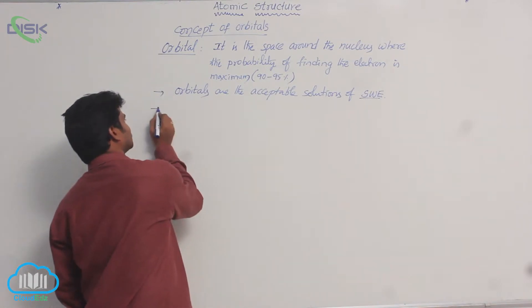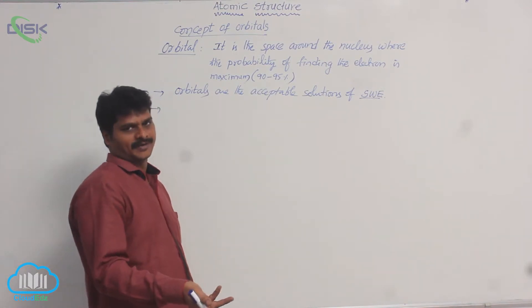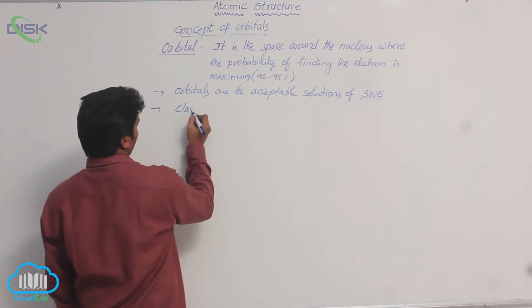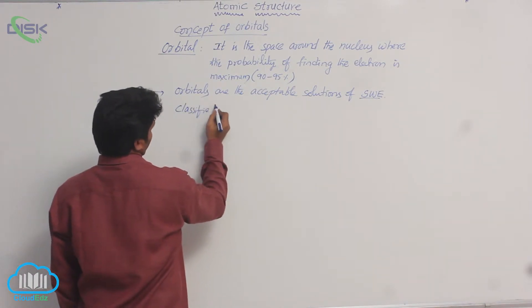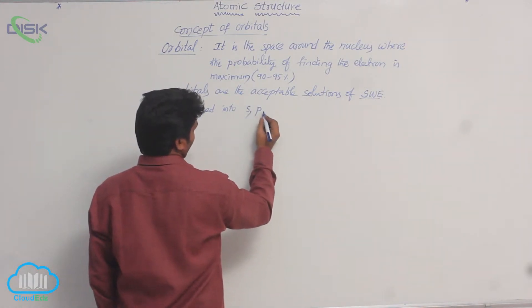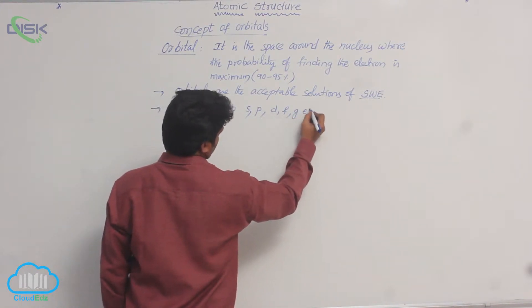Orbitals, based on their shape, are classified into different types. So orbitals are classified into s, p, d, f, g, etc. These are all in small letters.